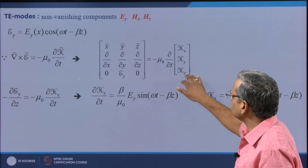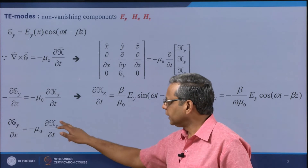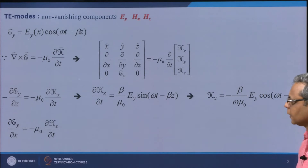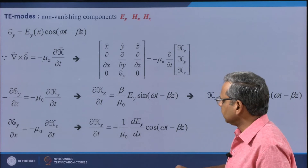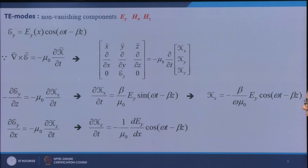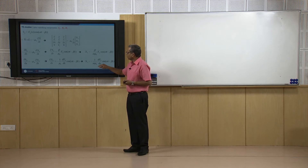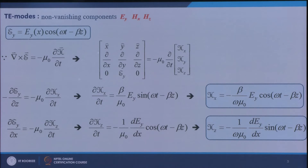Similarly, taking the z-component gives ∂EY/∂x = −μ₀ ∂HZ/∂t, so ∂HZ/∂t = −(1/μ₀)(dEY/dx) cos(ωt − βz). Integrating over time gives HZ = −(1/ωμ₀)(dEY/dx) sin(ωt − βz). So now I have all three components in place corresponding to TE modes, and we are ready to calculate the Poynting vector.